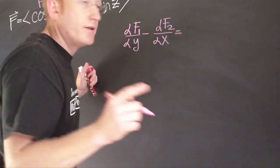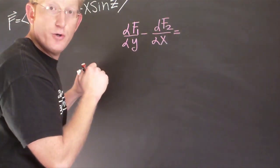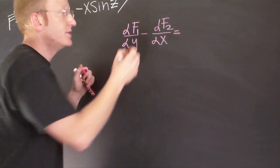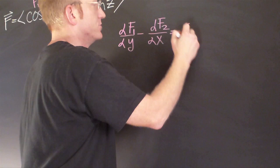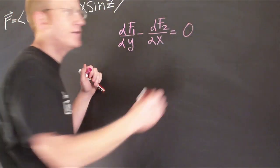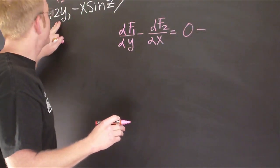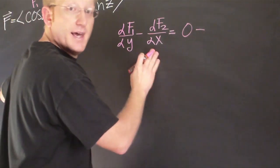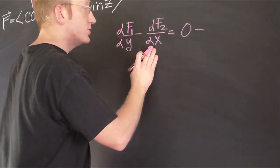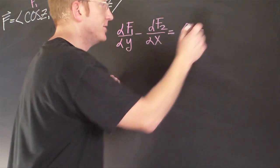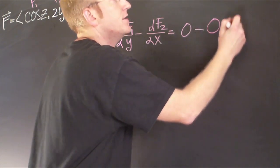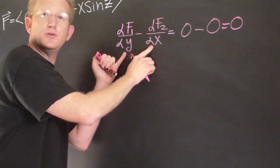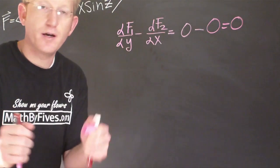My f1 was cosine of z. If I take the derivative of cosine z with respect to y, I get zero. Then subtracting off the derivative of f2 with respect to x — my f2 was 2y, so the derivative with respect to x is also zero. Zero minus zero is zero, which tells us these two mixed partials are equal. Let's go through and take a look at the other ones.